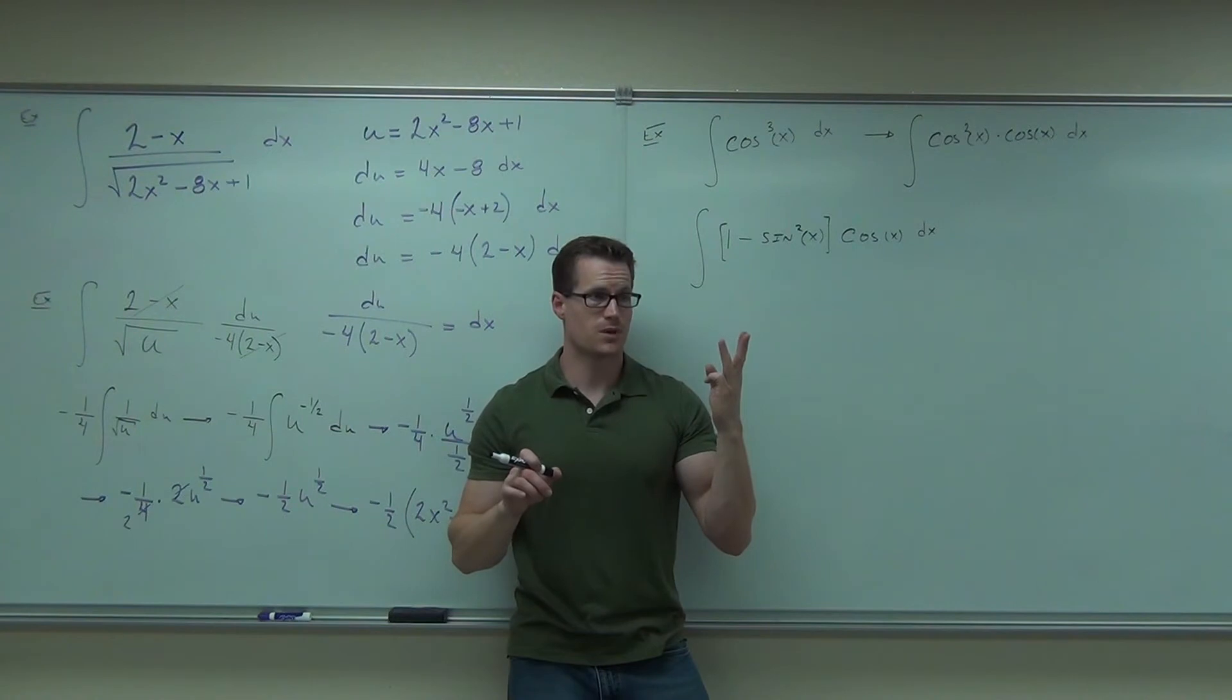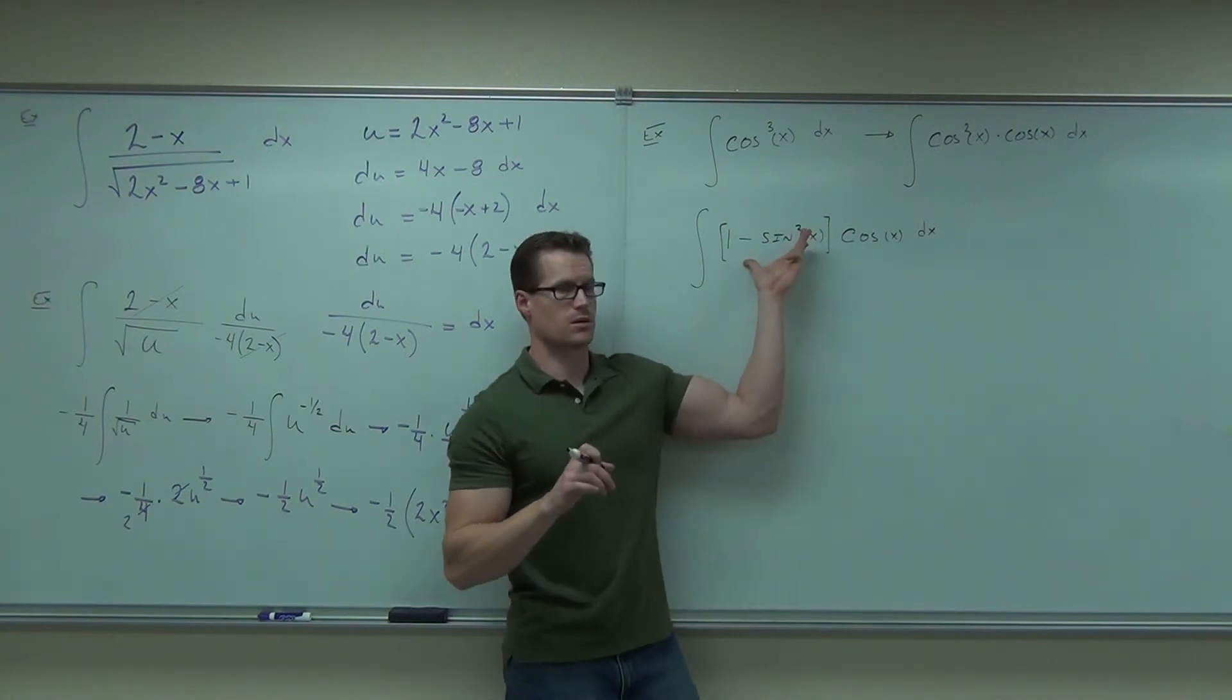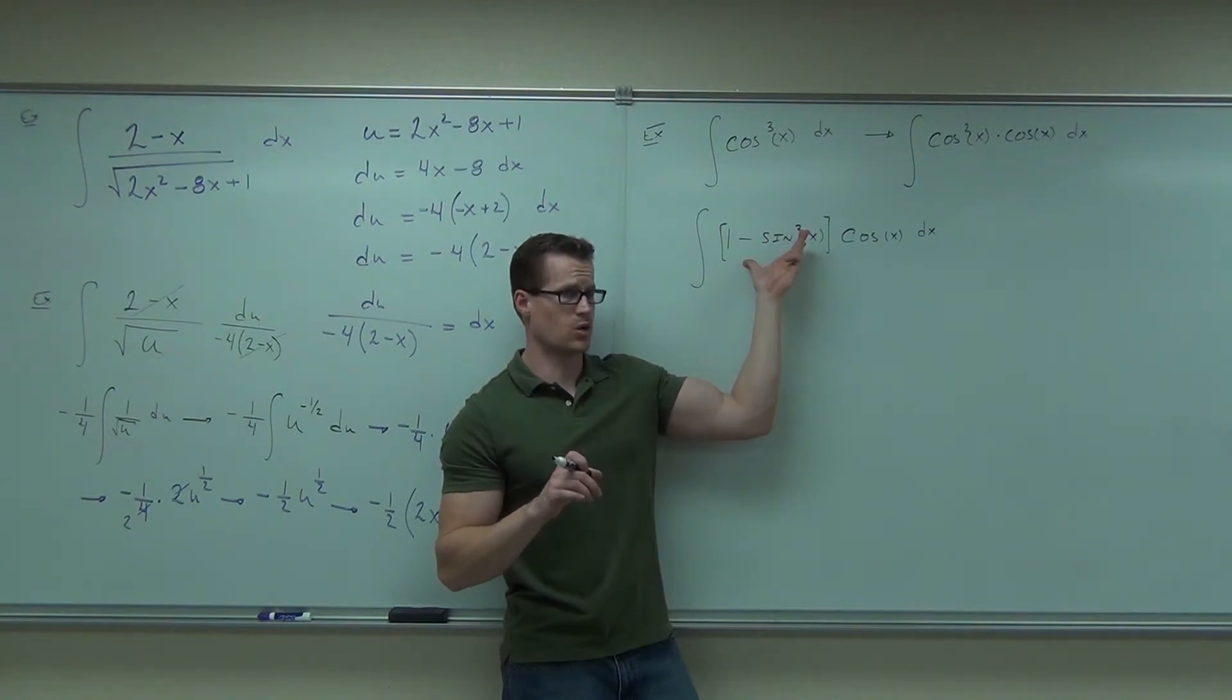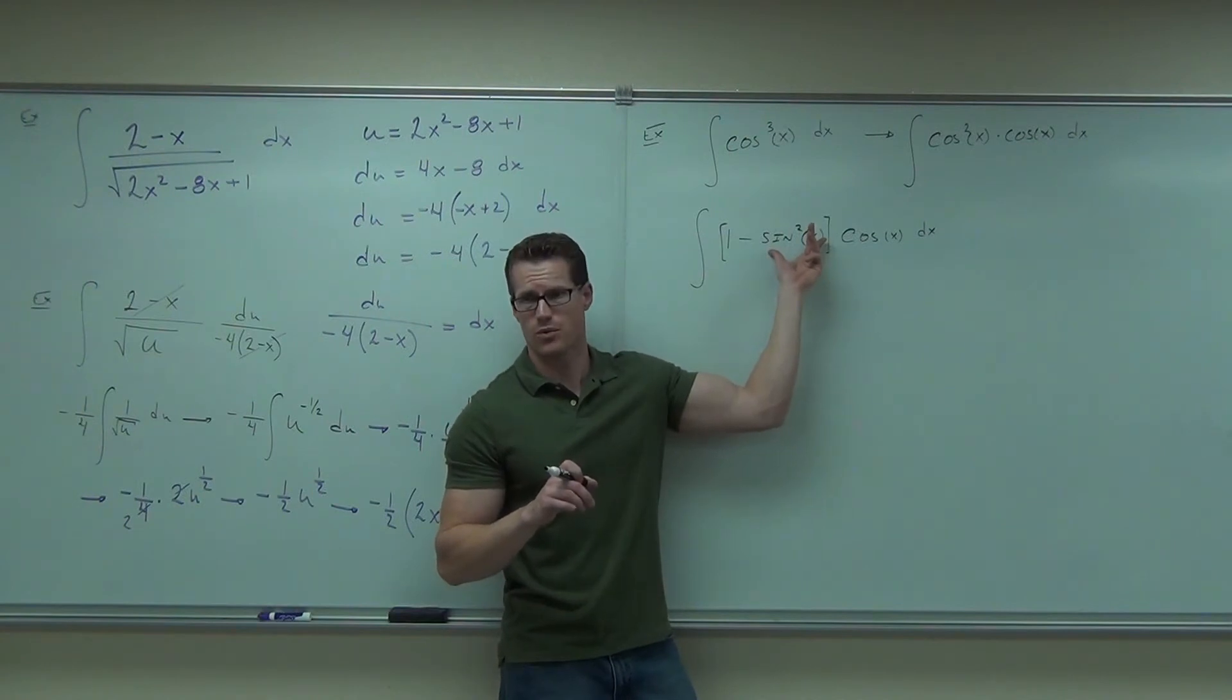Option number three, picking the whole entire thing here. You pick the whole entire thing, you've got to take the derivative of the whole entire thing and it has to show up. The derivative of the whole entire thing is a general power rule. You see the general power rule there? Two sine x cosine x. Does that appear? No. Bad option.